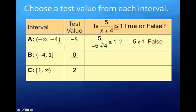Well, if I simplify, I get 5 over negative 1, which is negative 5, and negative 5 is not greater than or equal to 1. So that first interval is false.